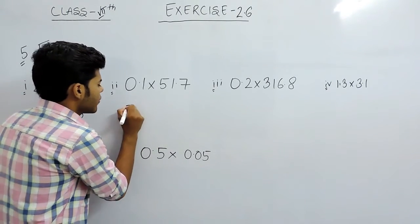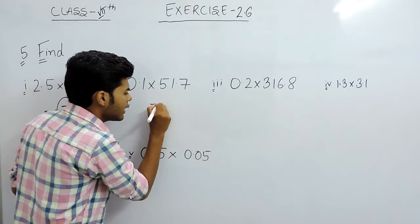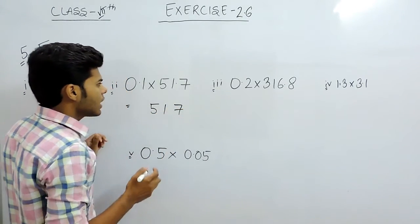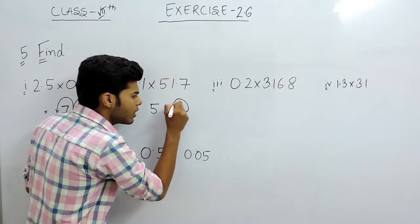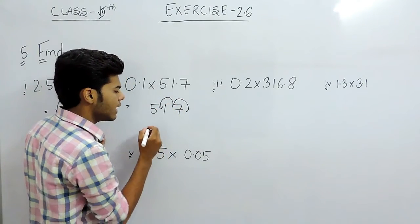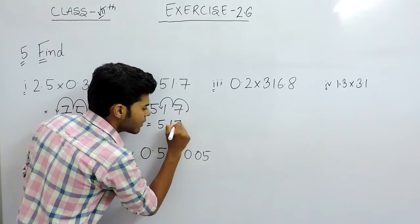Similarly here, we multiply 1 with 517 and it will give us 517. Now the number of decimal points are 1 and 2, so there are two decimal points. We will shift the decimal towards the left and our answer will be 5.17.